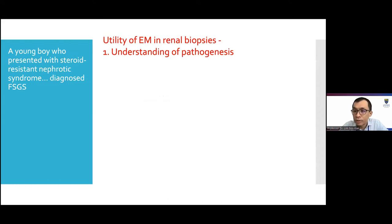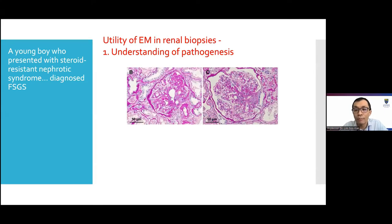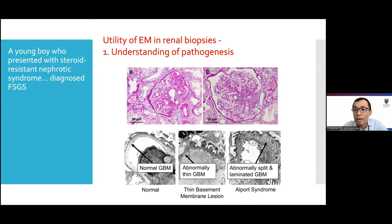From a clinician perspective, electron microscopy can help us in various aspects. The first is to understand the underlying pathogenesis. For example, a young boy presented with steroid-resistant nephrotic syndrome and was diagnosed with focal segmental glomerulosclerosis. He was given multiple courses of immunosuppressants but didn't respond. When we did a biopsy with electron microscopy, he was actually diagnosed with Alport syndrome, a genetic condition. Immunosuppressants were stopped and he was managed appropriately.